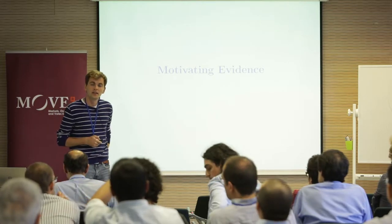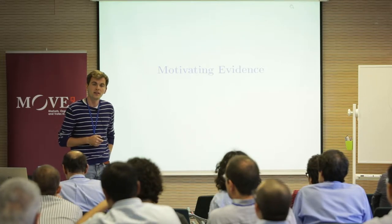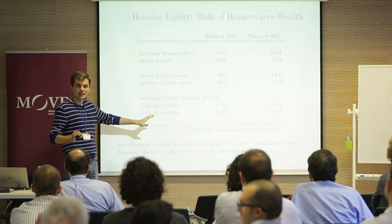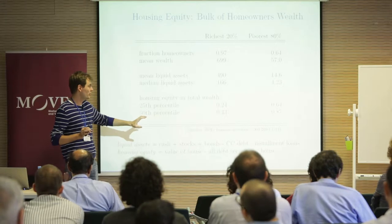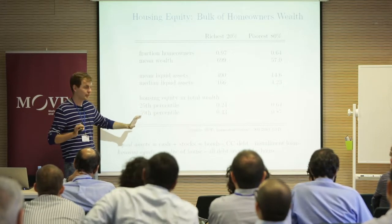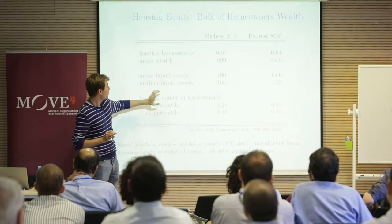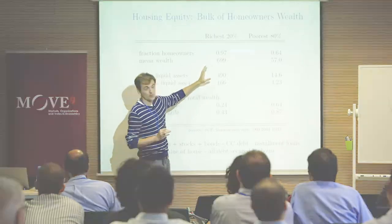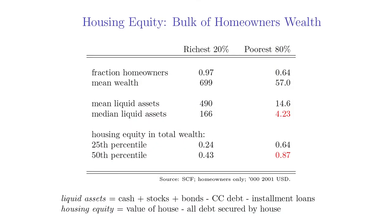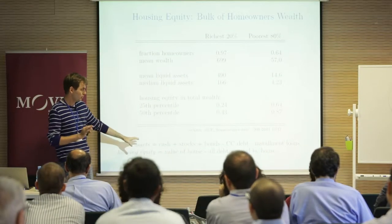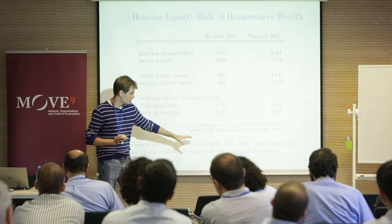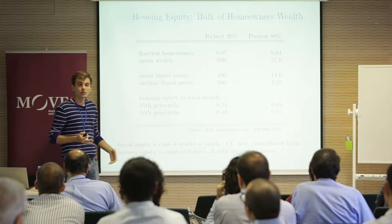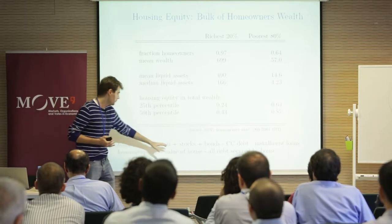Let me throw some motivating numbers at you. Looking at SCF data from 2001, with per-capita equivalization using OECD scales, homeowners only — divided into the poorest 80% and richest 20% by total wealth. Liquid assets follow Kaplan-Violante's definition: cash plus stocks plus bonds minus credit card debt minus installment loans. Housing equity is the value of the primary residence minus all debts secured by that house.